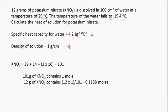The first thing we need to do is find the molar mass of potassium nitrate from the periodic table. Potassium has mass number 39, nitrogen 14, and oxygen 16. So KNO₃ is 39 plus 14 plus (3 × 16), giving 101 g/mol. This means one mole of potassium nitrate has a mass of 101 grams. Therefore, 12 grams of potassium nitrate contains 12 multiplied by 1 divided by 101, giving 0.1188 moles.